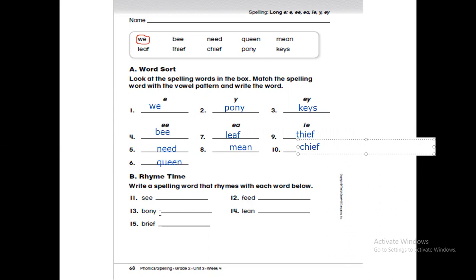Now rhyme time. Write a spelling word that rhymes with each word below. What's the meaning of rhyming words? They have the same ending sound. So: see, we, and bee. Pony, bunny, and pony. Reef, thief and chief, both of them. Feet, need. Lean, mean.